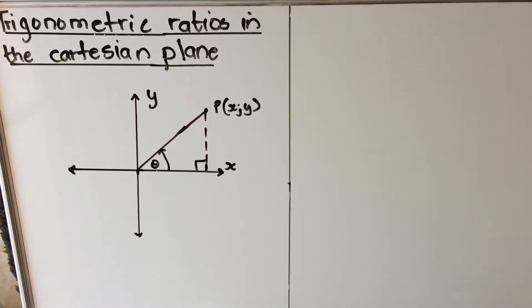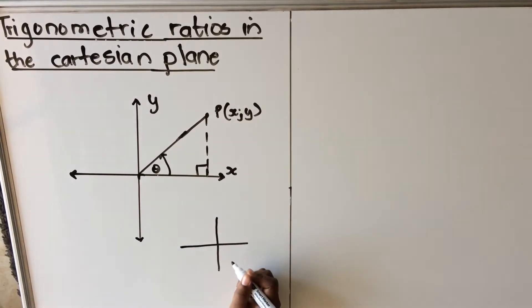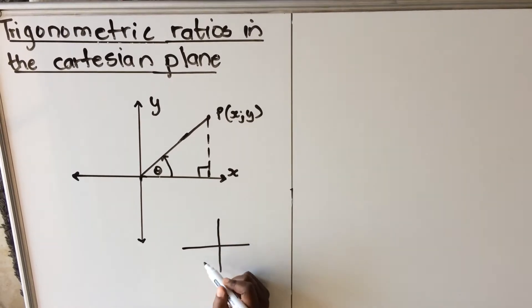When we are talking about the Cartesian plane, we are actually talking about the y-axis and the x-axis. When you look at them, they are divided into four. So we call these quadrants.